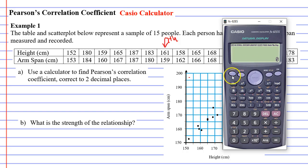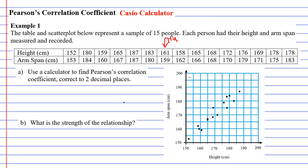To get the correlation coefficient, we need to find where it says stat, which is above the number 1. So we're going to go shift 1 and we're going to do number 7 for reg. And then we want the letter or pronumeral R. This is the symbol we use for the correlation coefficient. This is number 3 and then equals. We can see that our correlation coefficient is 0.97 to two decimal places.